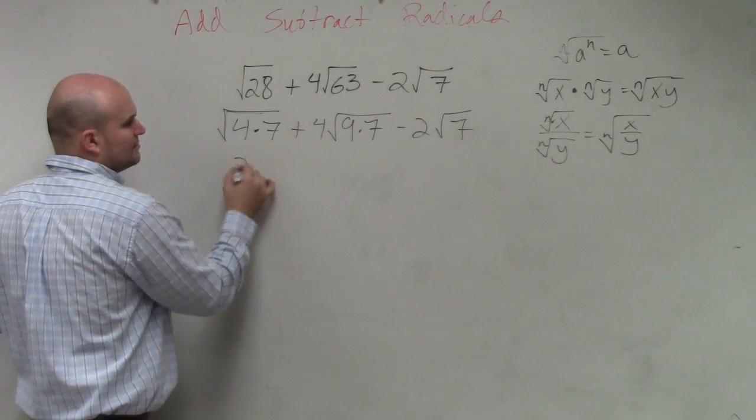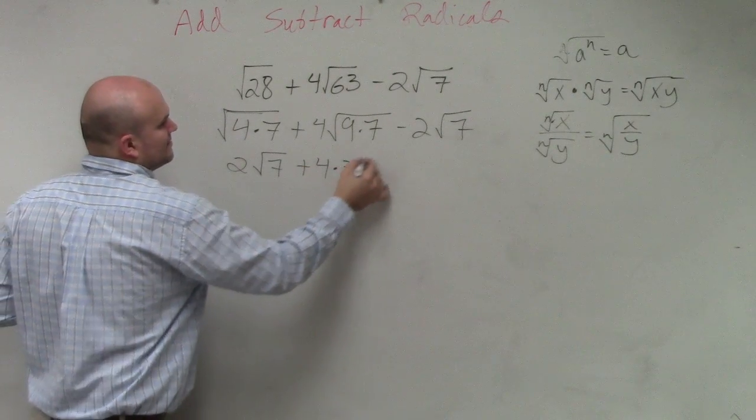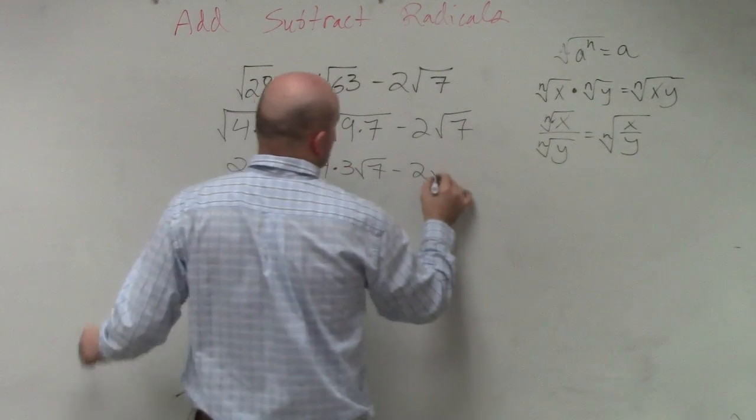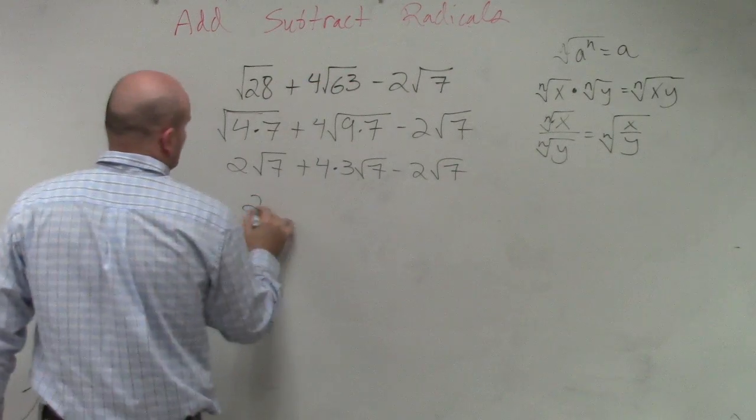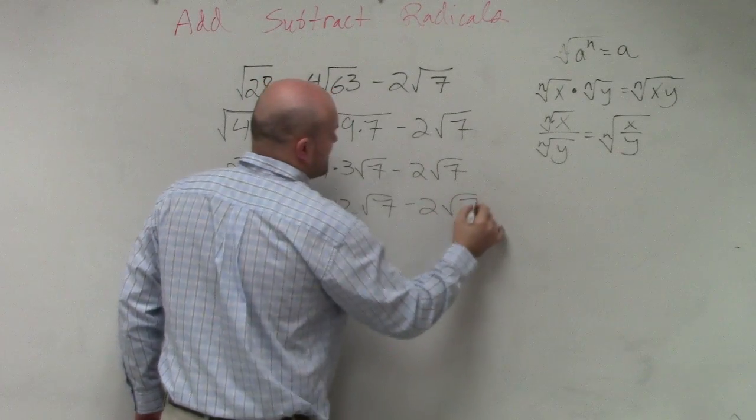Square root of 4 is 2 times square root of 7. Plus 4 times 3 square root of 7. Minus 2 square root of 7. 2 square root of 7 plus 12 square root of 7 minus 2 square root of 7.